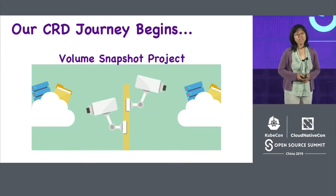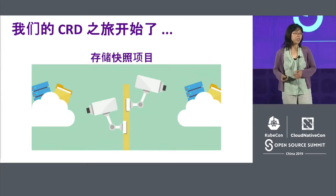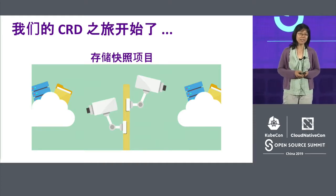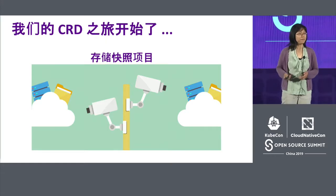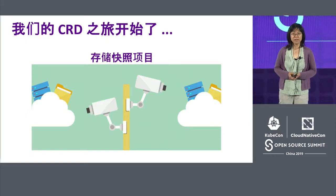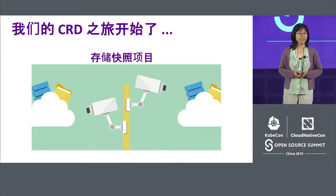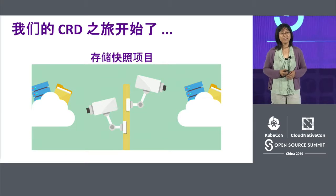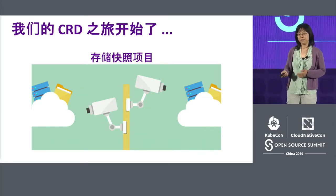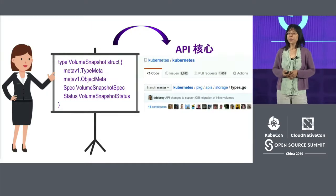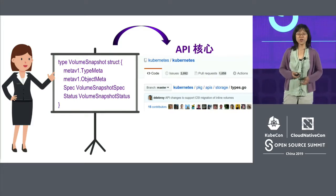Our journey starts about a year ago when SIG Storage started a snapshot project. Storage is for storing data — it is important. You don't want to lose it. Things might happen, things might fail, data might be corrupted. Snapshot gives you an easy, quick way to recover your data. It's very much like taking a picture of your data, and later you can recover your data from that point. We worked very hard on this project since it provides such important features for storage.